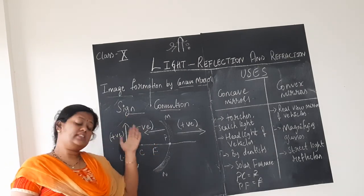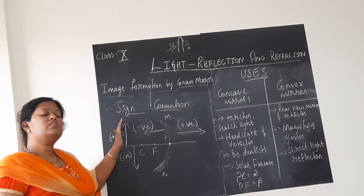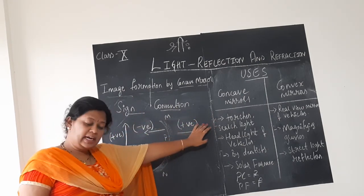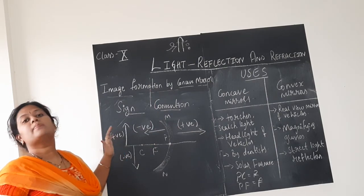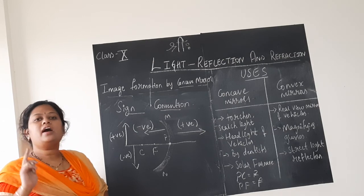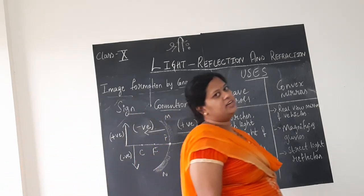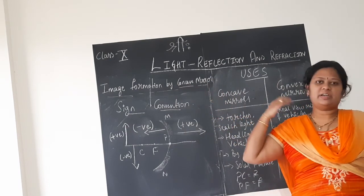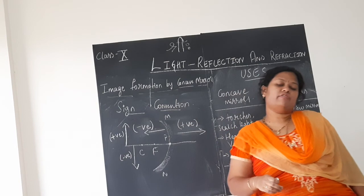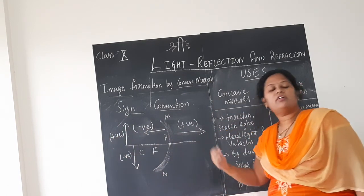You saw me draw six ray diagrams totally for image formation by concave mirror. In all six ray diagrams, we kept the object towards the left side of the mirror. Have you ever seen the object placed on the right? No. In one of the cases the image was found behind the mirror, but in all the cases we used to place the objects towards the left hand side of the mirror. So that is one condition of the sign convention — always the objects are placed on the left hand side of the mirror, so that the light from the source is always coming from the left hand side.